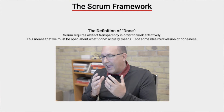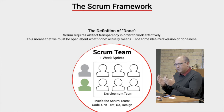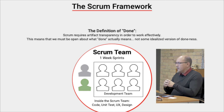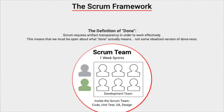This means we must be open about what 'done' actually means — not some idealized version of it. Imagine you have a Scrum team doing one-week-long sprints. Inside the team, every sprint they're building software: they do coding, unit testing, they look at the user experience, the design of the product. Within a one-week sprint they do a mini project — coding, unit testing, UX, and design — and that's what they actually accomplish.